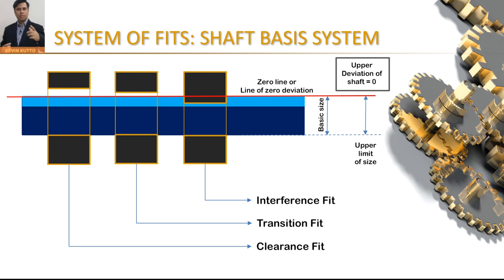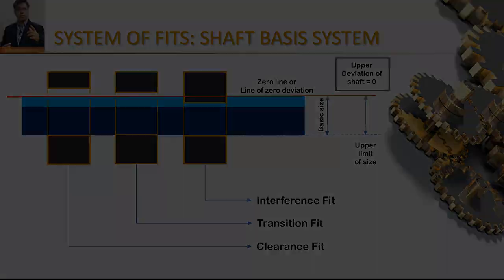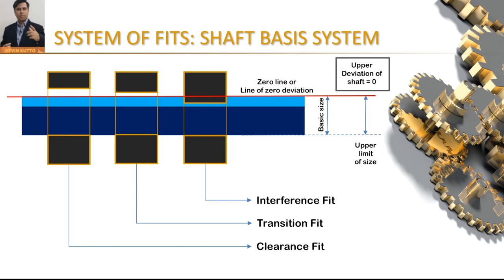The three remaining factors we can change are the lower limit of size of shaft and the upper and lower limits of size of hole. The shaft basis system is used when bars are readily available and do not require further machining — we change the hole sizes to get different fits.